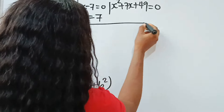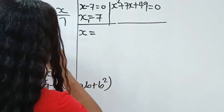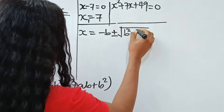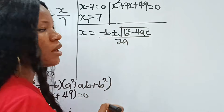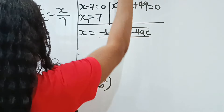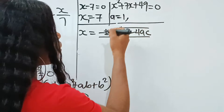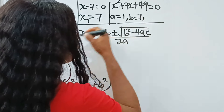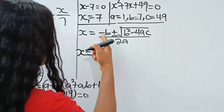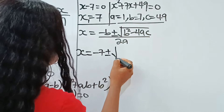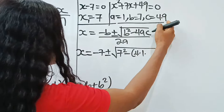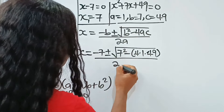To solve the quadratic equation, we use the quadratic formula: x equals negative b plus or minus the square root of b squared minus 4ac, all divided by 2a. Here, a equals 1 (coefficient of x squared), b equals 7 (coefficient of x), and c equals 49 (the constant). So x equals negative 7 plus or minus the square root of 7 squared minus 4 times 1 times 49, all divided by 2a.